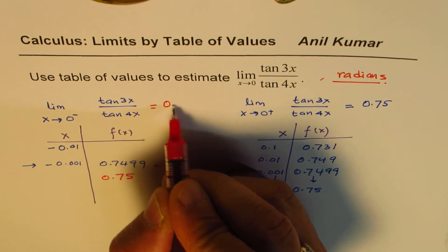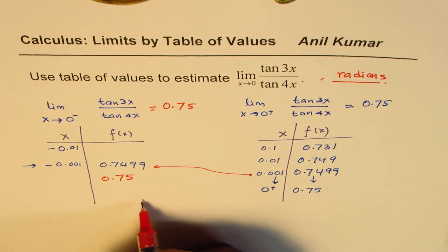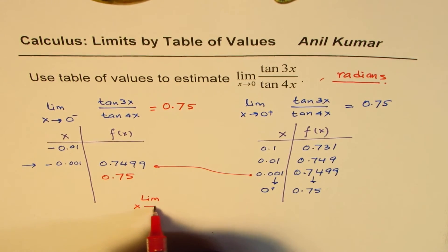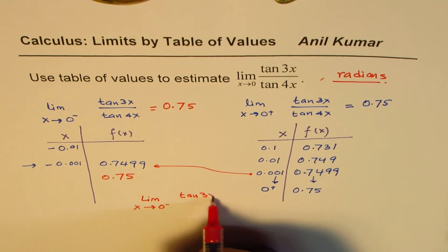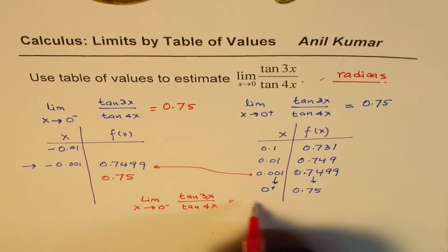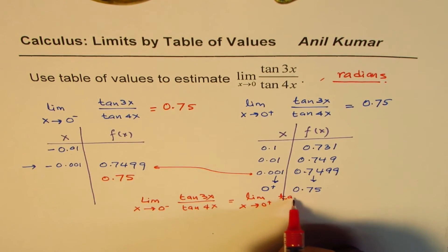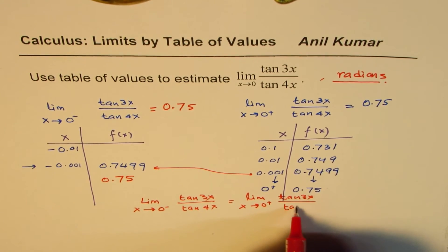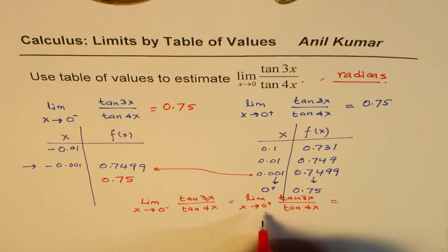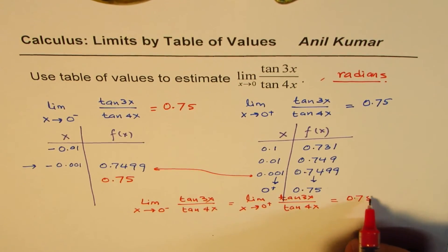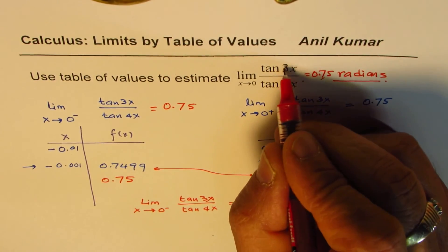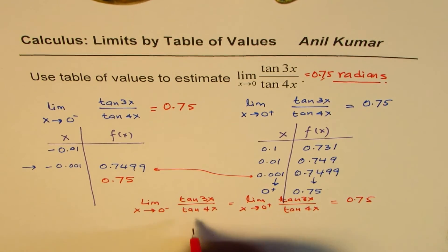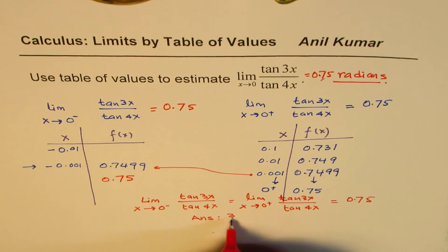Since we have limit of x approaching 0 from negative side for the function tan 3x over tan 4x is equals to limit x approaching 0 from the right side for tan 3x over tan 4x. Both are same. Since both are same, we can write that this limit is same as 0.75. Both limits are equal. Therefore, the answer is 0.75, which is 3 over 4. So our answer is 3 over 4.